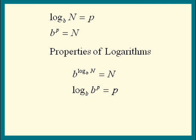The next two properties are obvious, but often used. b to the first power is b. We knew that already. Next, because b to the zero power is one, log one is always zero.